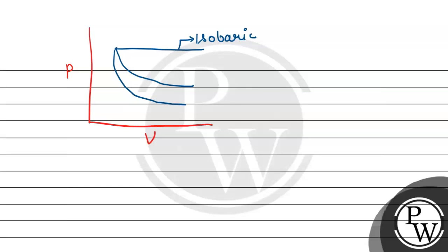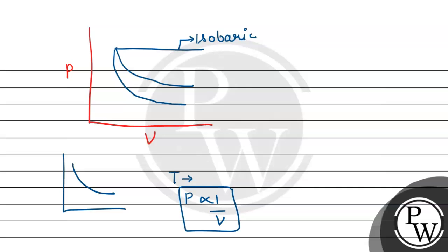We have the PV curve for the isothermal process where temperature remains constant, and pressure is inversely proportional to volume. The adiabatic process gives a similar curve shape. We need to determine which of the two curves — isothermal or adiabatic — is steeper.